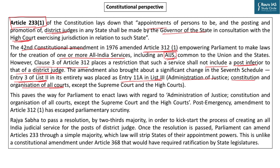The 42nd Amendment also transferred Entry 3 of List 2 (State List) to Entry 11A of List 3 (Concurrent List). This entry covers administration of justice, and constitution and organization of all courts except the Supreme Court and High Courts. With this entry now in the Concurrent List, Parliament may enact law for administration of justice and organization of all subordinate courts. This amendment has so far escaped parliamentary and judicial scrutiny. Additionally, for AIJS, Rajya Sabha must pass a resolution by a two-thirds majority agreeing to form the new All India Service, which kicks off the process.